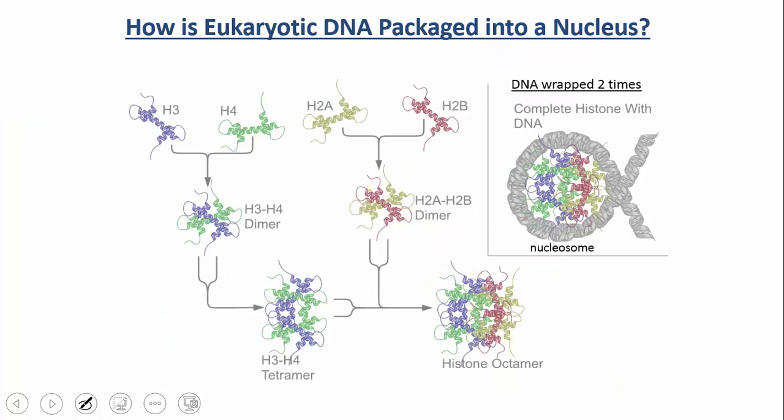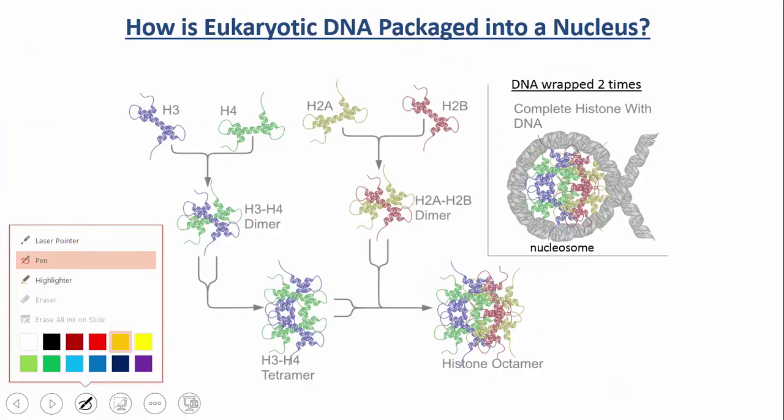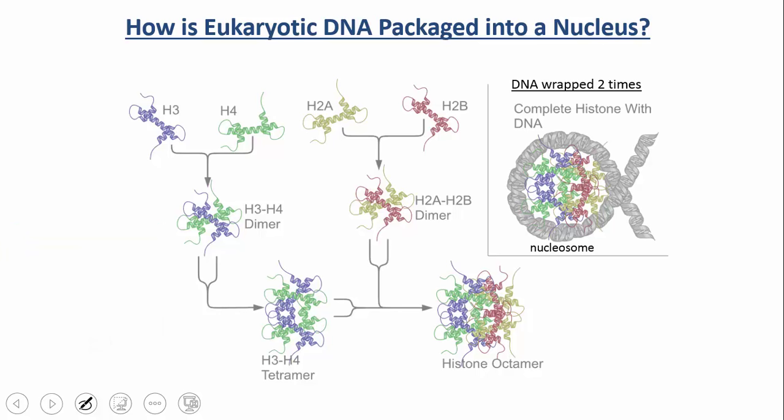Let's look at the histone structure more closely. Within the nucleosome core, you have four different histones: H3, H4, H2A, and H2B. Don't get bogged down with the names — when you have any type of macromolecule with weird numbering systems, they're often numbered in the order they were discovered, the order they evolved, or the order they occur in a biological pathway. You want to know the names — H3, H4, H2A, H2B — but don't let that confuse you.